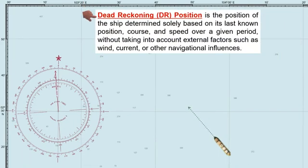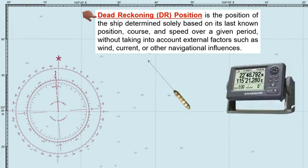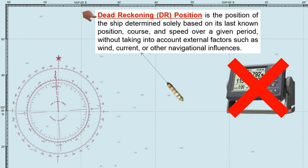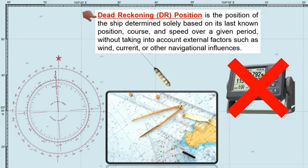Dead reckoning, or DR position, is the position of the ship determined solely based on its last known position, course, and speed over a given period, without taking into account external factors such as wind, current, or other navigational influences. Let's say that due to unforeseen circumstances, our GPS receiver on board is no longer operational and we're navigating on the high seas. In this situation, our first option is to determine the ship's position through dead reckoning.